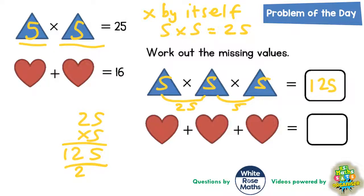And that is the answer to the first question. So on to the hearts. Well, a heart plus a heart equals 16. Again the hearts are the same, so which number added to itself makes 16?